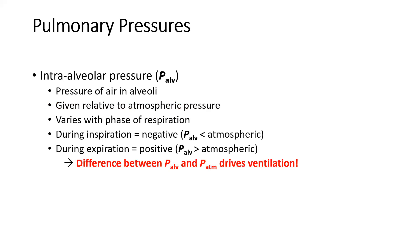The intra-alveolar pressure is the pressure of air within the alveoli, given relative to atmospheric pressure. It varies with the phases of respiration. During inspiration, when the diaphragm flattens out and the ribcage opens wide, the alveolar pressure is going to be lower than zero — so it's a negative value. We set atmospheric at zero, so if intra-alveolar pressure drops below that zero, it must be negative. During inspiration, the intra-alveolar pressure is always a negative value.